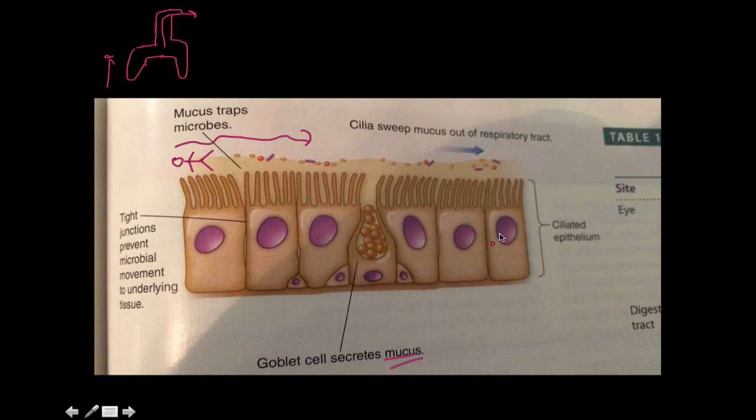It's made by goblet cells, which apparently are supposed to look like goblets themselves, like Harry Potter, Goblet of Fire. Yeah, I don't see that connection there. But anyways, tight junctions. Again, only way that a pathogen can get through that would be to actually kill them themselves.